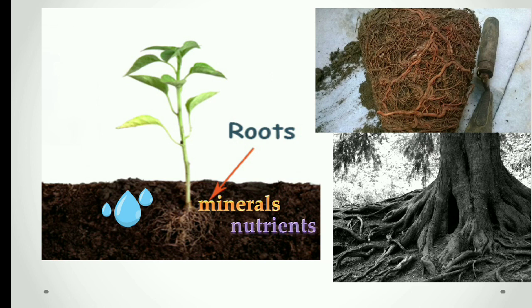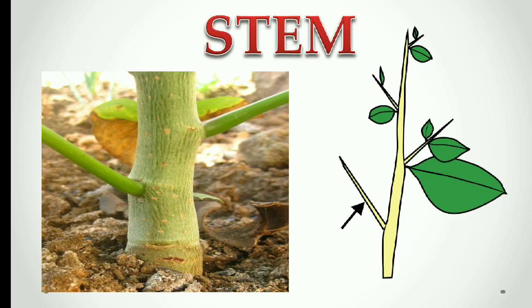The roots also help the plant to stand stable in the soil. Now we are going to look at the second part of the plant, that is stem. Stem is the part of the plant that stays above the ground. Roots get water and nutrients from the soil, and the stems carry the water and nutrients throughout the plant. There is one more function of the stem: it also transports food prepared by the leaves to all parts of the plant, including roots.